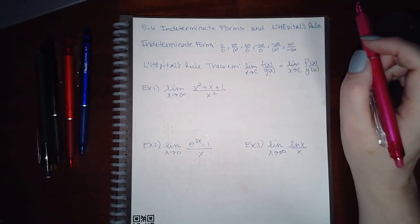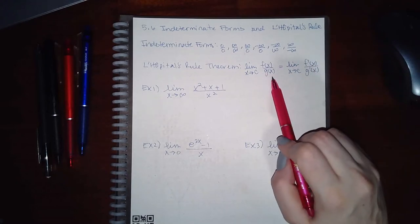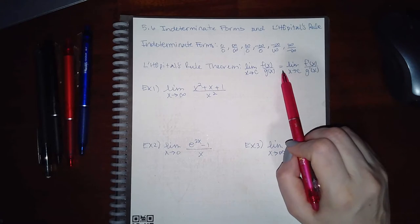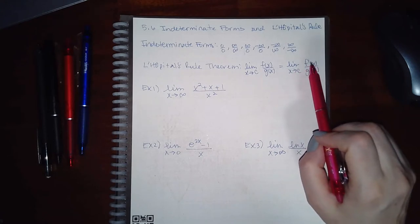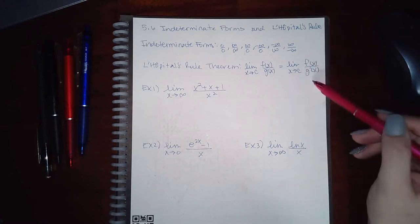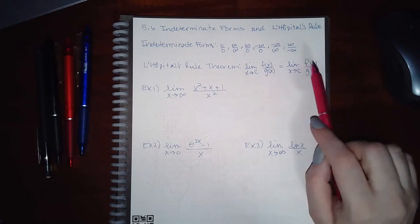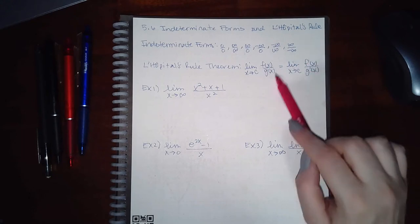L'Hopital's Rule says that if you're taking the limit of a quotient, that limit is the same value as if you took the limit of the quotient of the derivatives. Importantly, you do not apply the quotient rule to find this derivative.